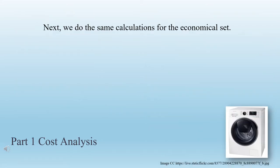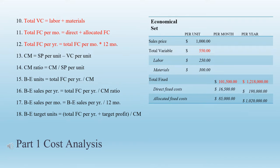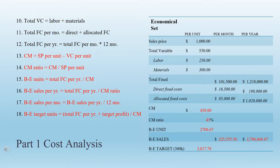Next, we do the same calculations for the economical set. Steps 10 through 12 gave us a total variable cost per unit of $550, total fixed cost per month of $101,500, and total fixed cost per year of $1,218,000. Steps 13 through 18 yielded a contribution margin of $450 per unit, contribution margin ratio of 45%, break-even in units of 2,706.67 units, break-even in sales per month of $225,555.56, break-even in sales per year of $2,706,666.67, and a break-even with a target profit of $300,000 of 3,817.78 units.